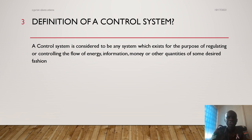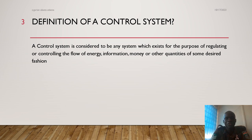Definition of a control system: a control system is considered to be any system which exists for the purpose of regulating or controlling the flow of energy, information, money, or some other quantities, or some desired function.